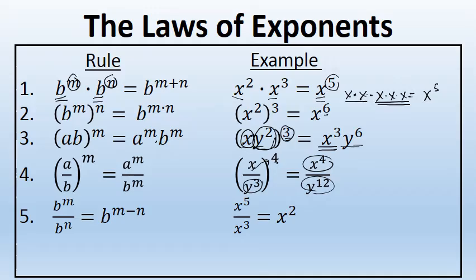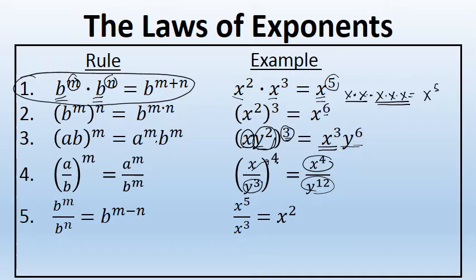Law 5 is b to the m over b to the n. This is similar to rule 1 — in rule 1 we talked about the result of multiplying the same base. Rule 5 discusses dividing the same base. When you have b to the m over b to the n, that is equal to b to the power of m minus n. The exponents here are being subtracted. For example, x to the fifth over x to the third is x to the power of 5 minus 3, or x to the second.